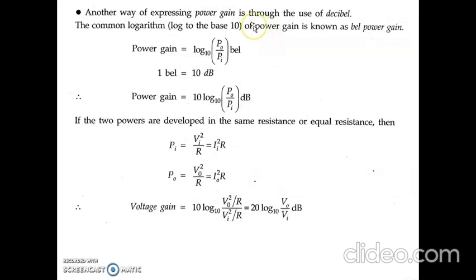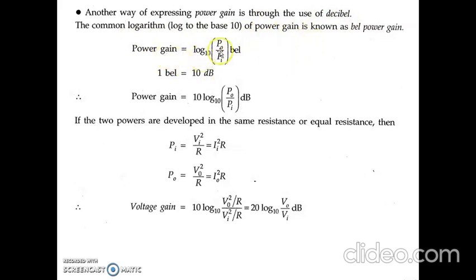The power gain can be expressed in decibels. The common logarithm (log base 10) of power gain is known as the bel power gain. Power gain equals log₁₀(P₀/Pᵢ) bels, and since one bel equals 10 dB, power gain equals 10·log₁₀(P₀/Pᵢ) dB.